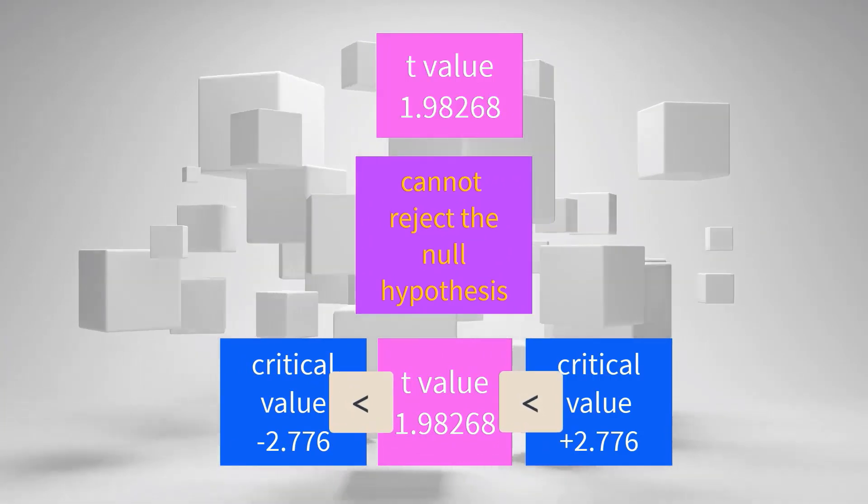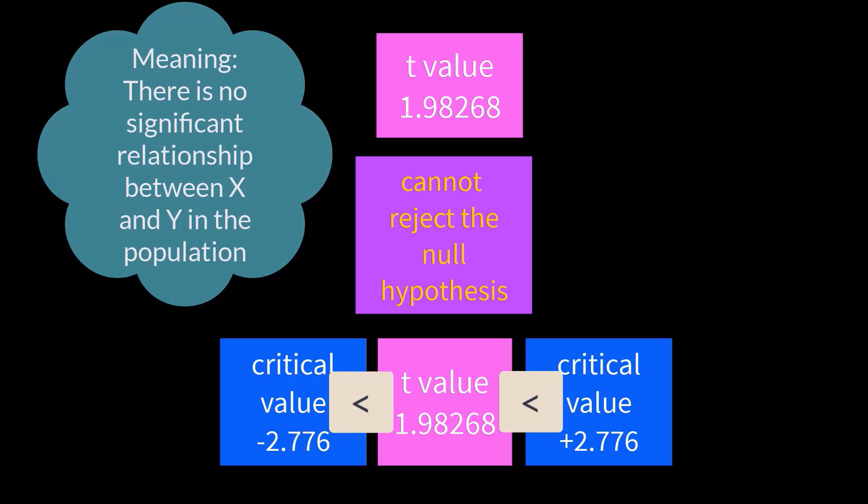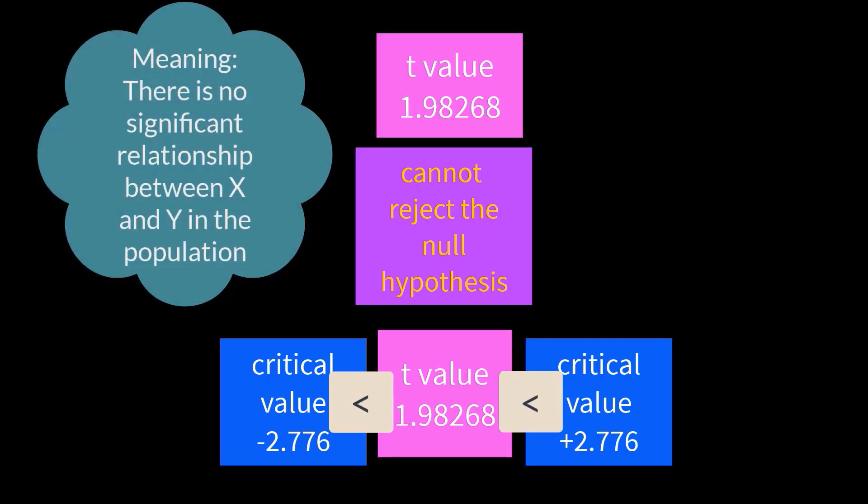That means the correlation in the population is equal to zero. There is no significant relationship between X and Y in the population, and we cannot use the regression line for prediction.